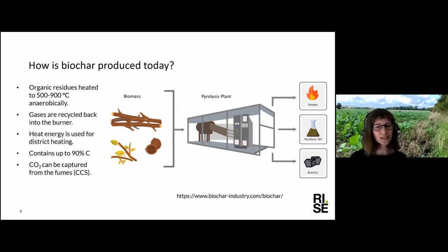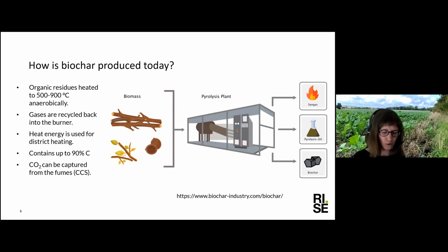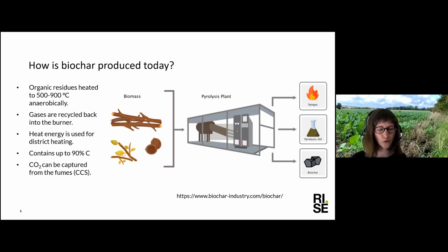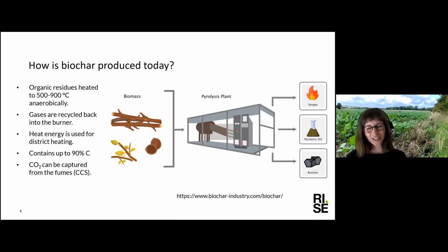The heat produced is used for district heating, so this kind of plant is only interesting if you're heating a city or have a lot of buildings. Some farms in Sweden use this type of pyrolysis plant both for heating and to produce biochar for use in their own agriculture.